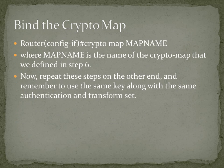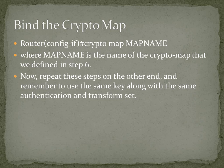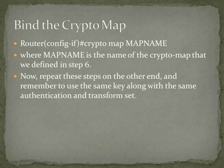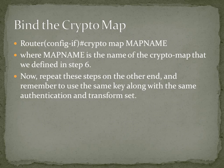Then we want to bind it to that particular interface — just like we bind a hostname to a computer, we want to bind that crypto map to the router we're using: crypto map map-name. That one worked really, really well. Then repeat these steps on the other end, and remember to use the same key along with the same authentication and transform set. Let the routers pre-share the key, and then let the router do the work once you've done that.